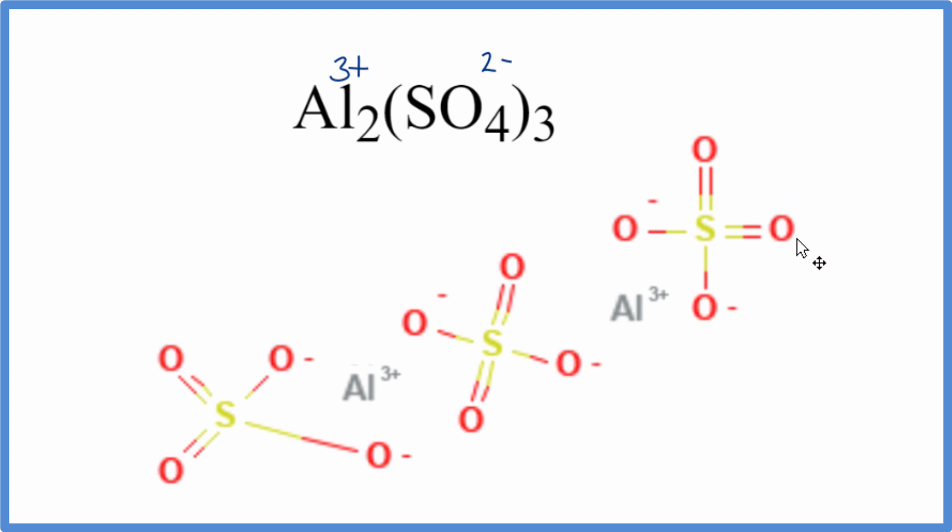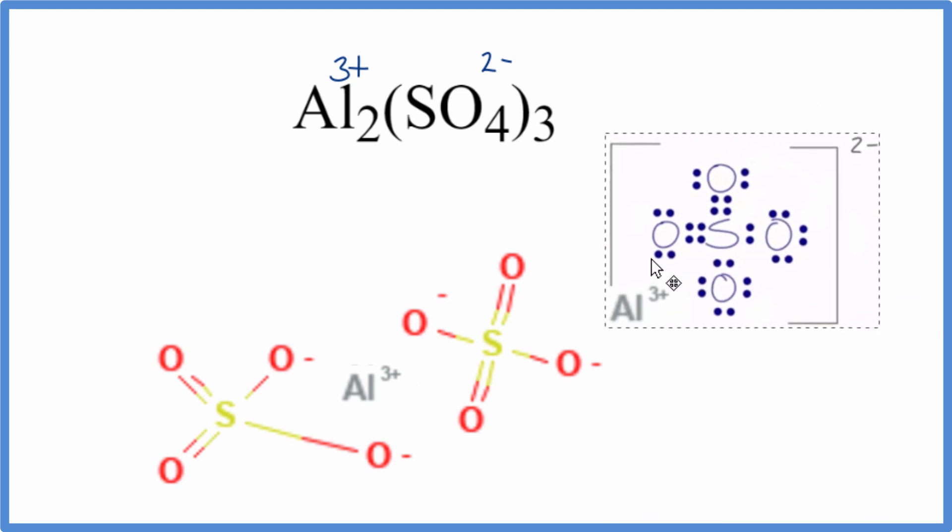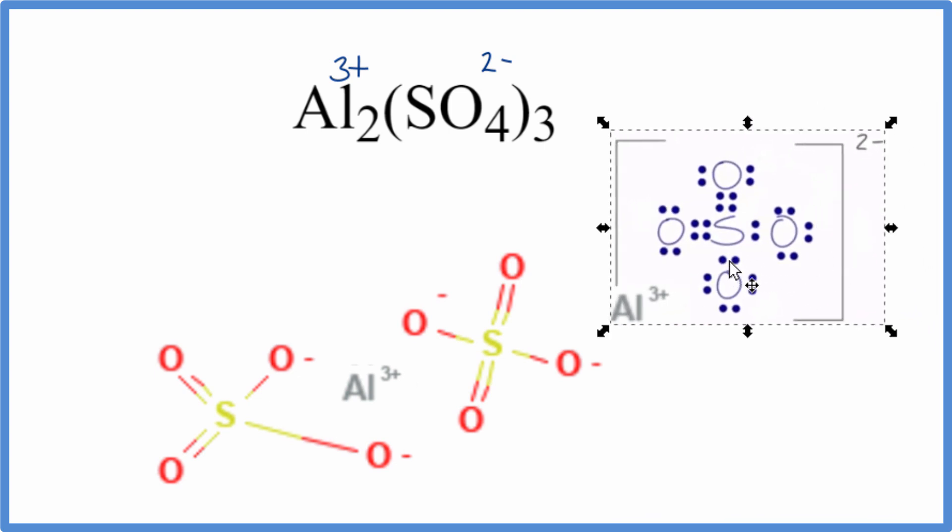If you want to draw the Lewis structure, this is one way to draw it. You could also have your sulfates like this - that works as well. This is Dr. B with the Lewis structure for Al2(SO4)3. Thanks for watching.